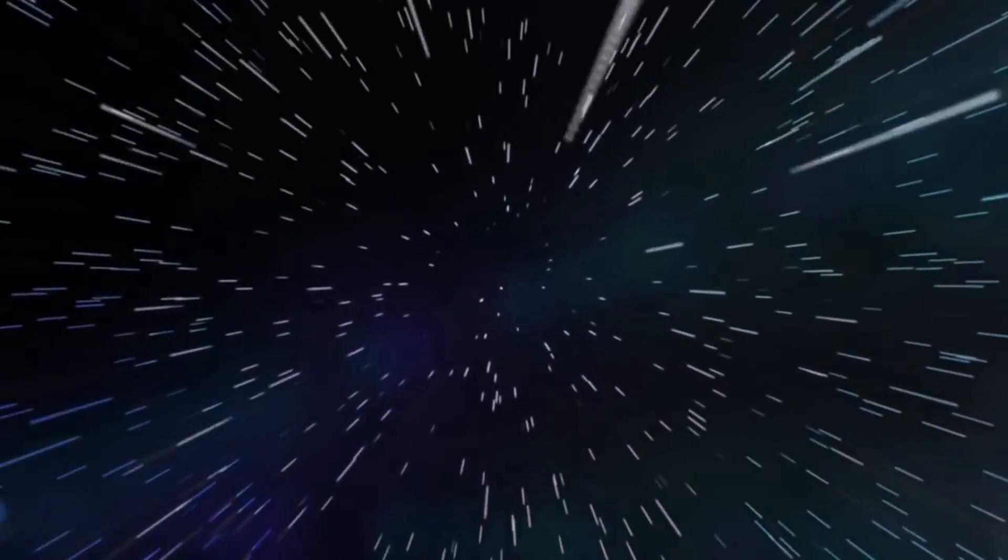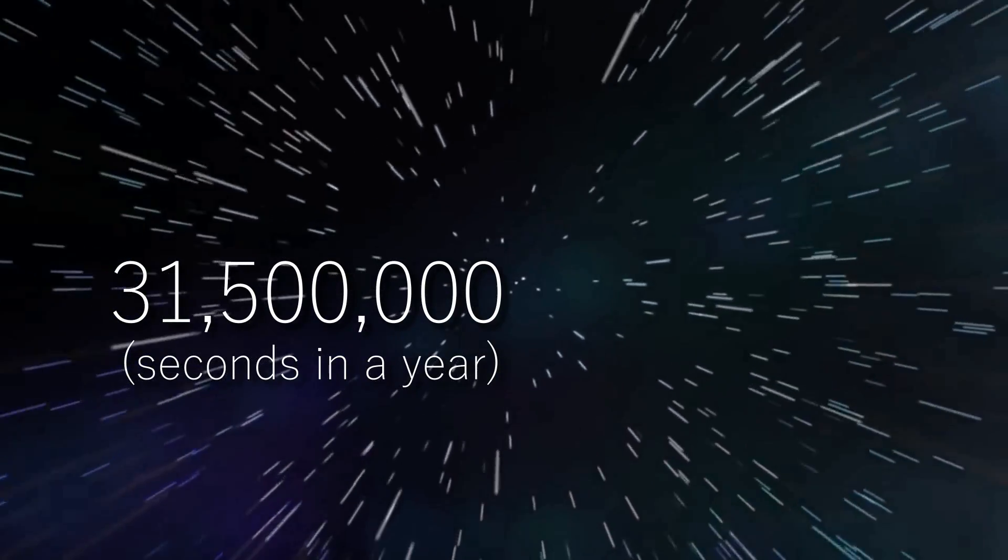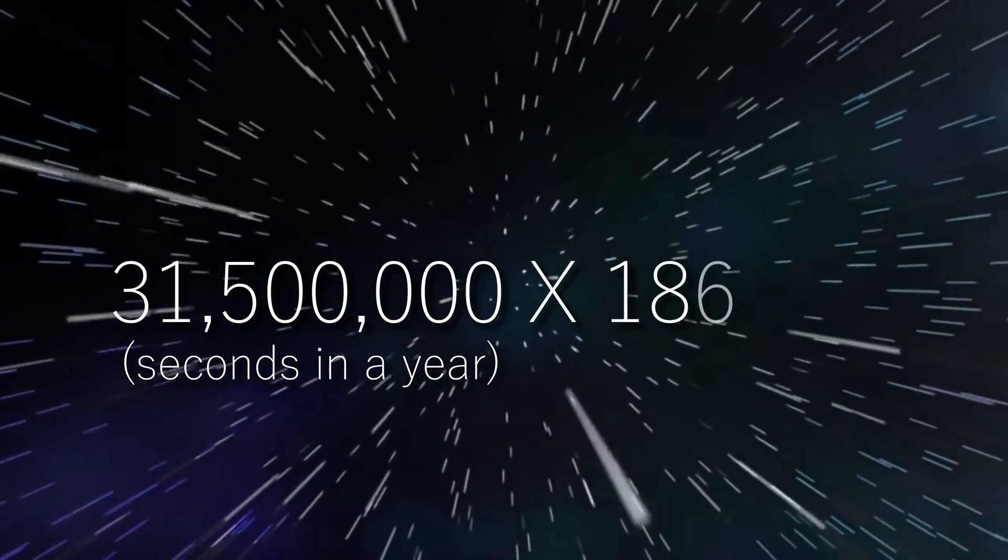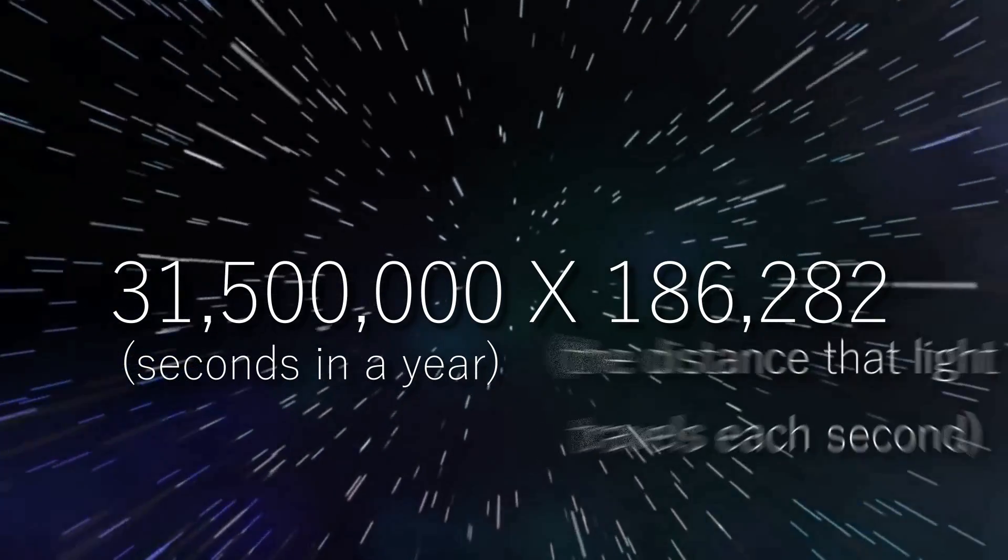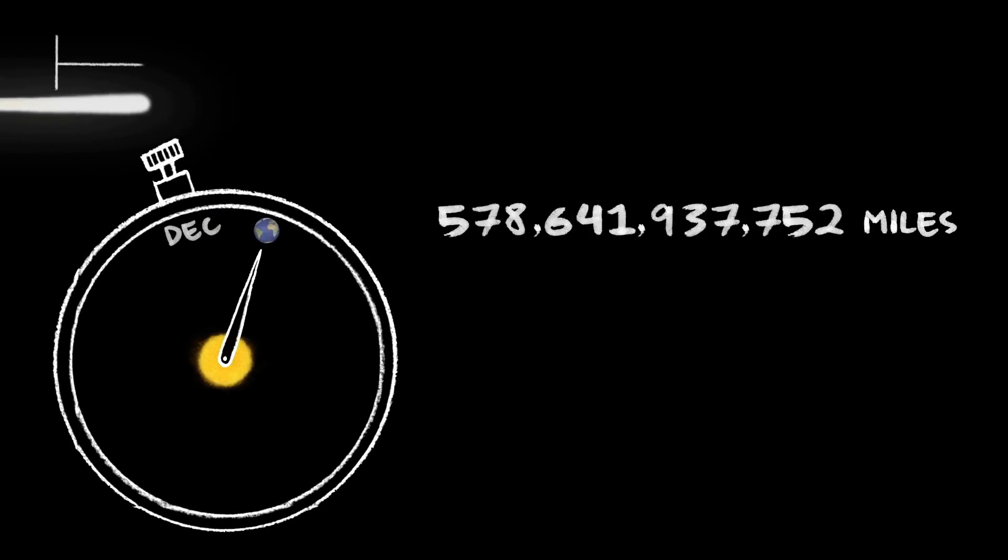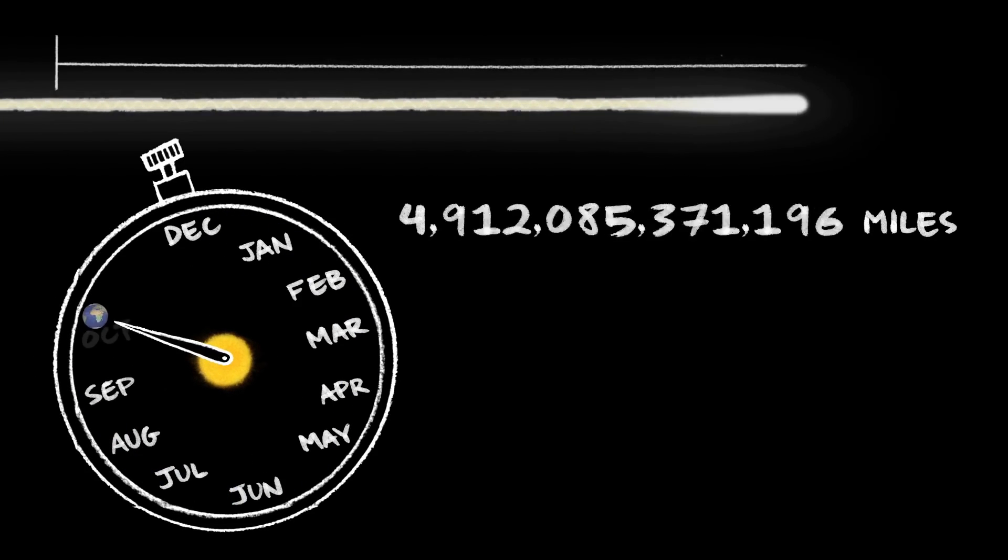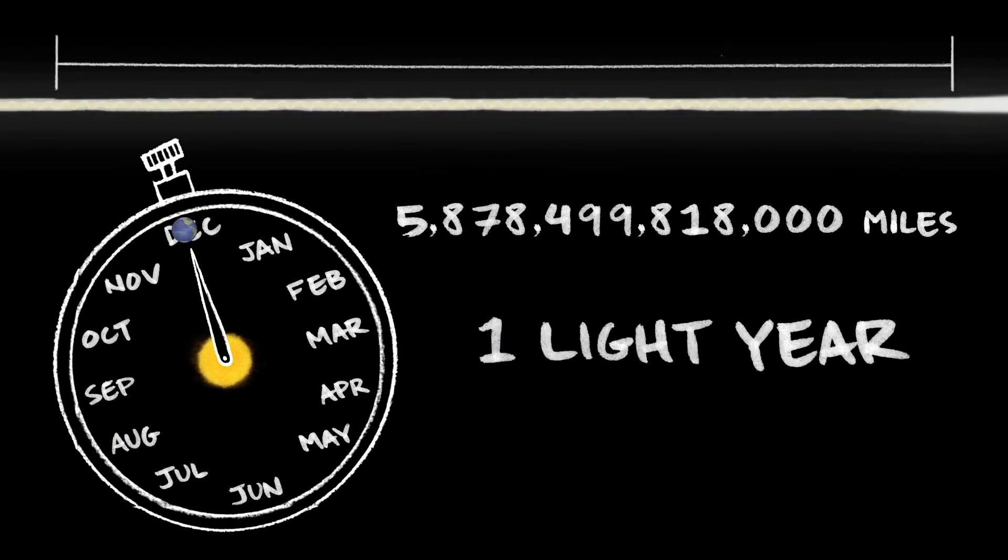If you are wondering, there are just about 31,500,000 seconds in a year. And if you multiply it by 186,282 miles, which is the distance that light travels each second, you get the distance that light travels in one year, which is about 5.9 trillion miles, or 9.4 trillion kilometers.